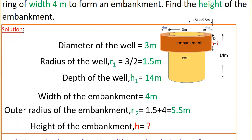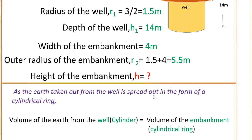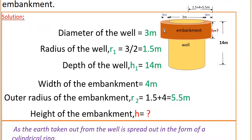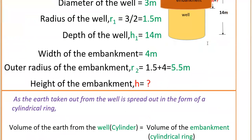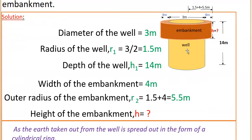We have to find the height of the embankment. Since the earth taken out from the well is spread out in the form of a cylindrical ring, the volume of the earth from the well is equal to the volume of the embankment. The volume of the earth is nothing but the volume of the well, which is in the shape of a cylinder. So the volume of the well is equal to the volume of the cylindrical ring, where we have to exclude the inner hollow part.